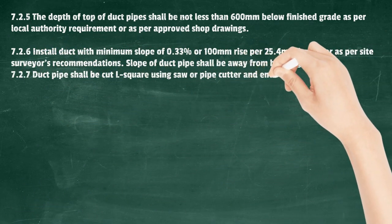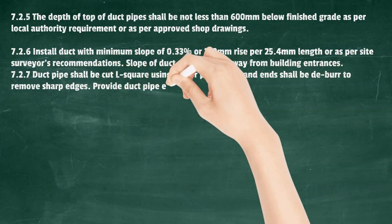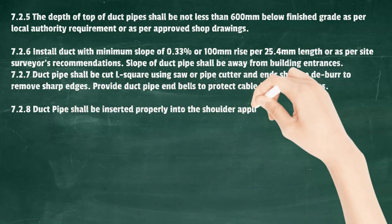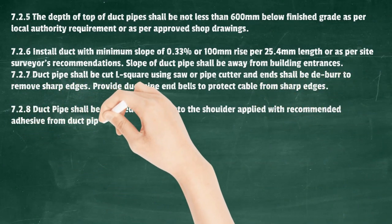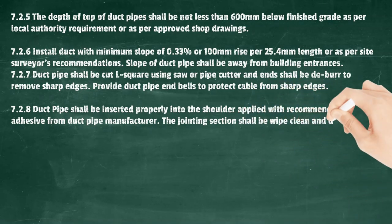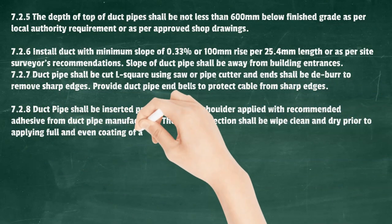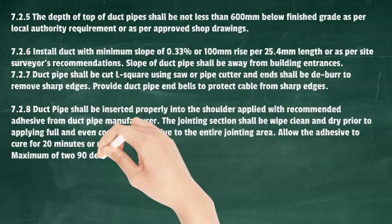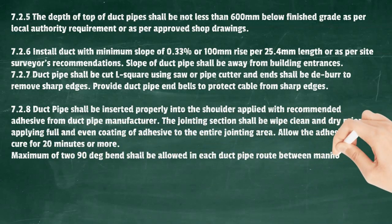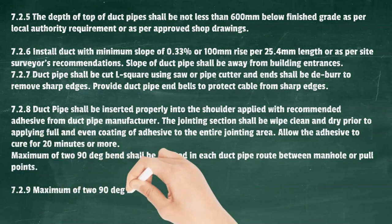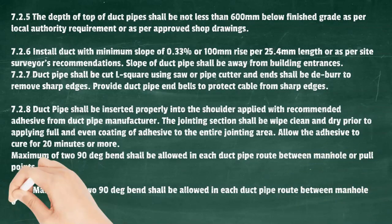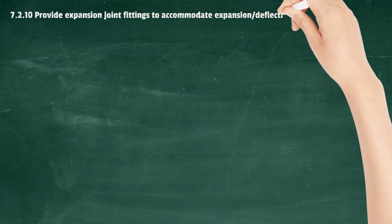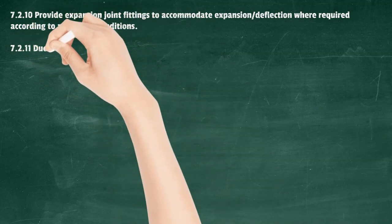Duct pipe shall be cut square using a saw or pipe cutter and ends shall be deburred to remove sharp edges. Provide duct pipe end bells to protect cable from sharp edges. Duct pipe shall be inserted properly into the shoulder, applied with recommended adhesive from the duct pipe manufacturer. The jointing section shall be wiped clean and dry prior to applying a full and even coating of adhesive to the entire jointing area. Allow the adhesive to cure for 20 minutes or more. Maximum 290-degree bend shall be allowed in each duct pipe route between manhole or pull points.